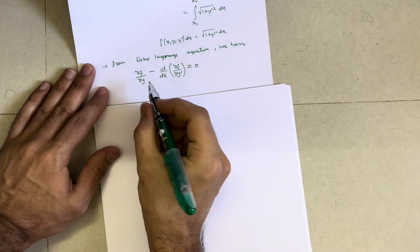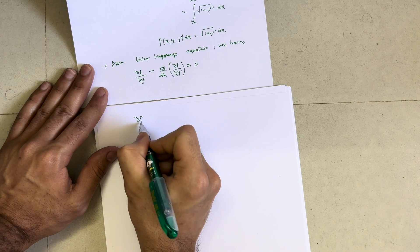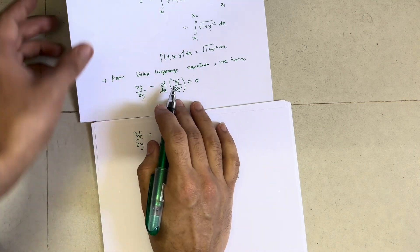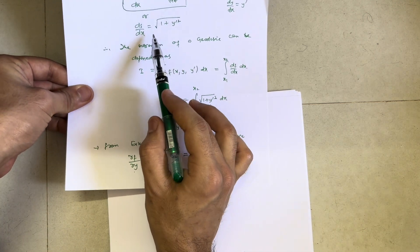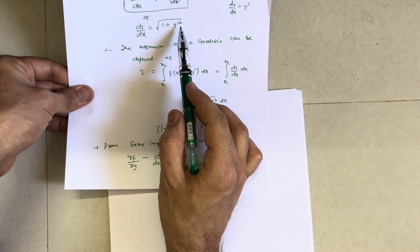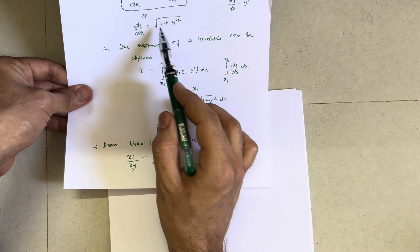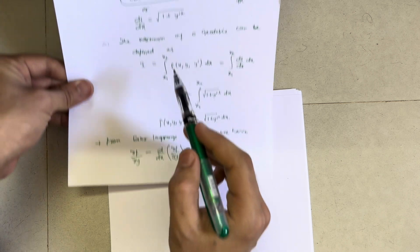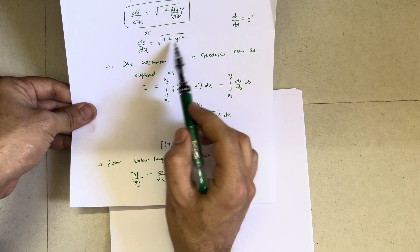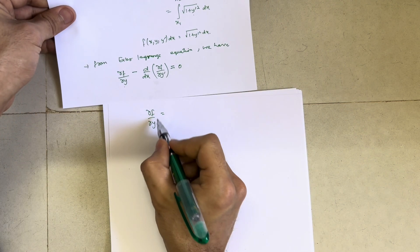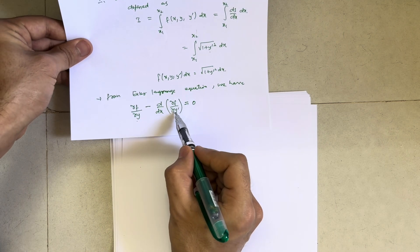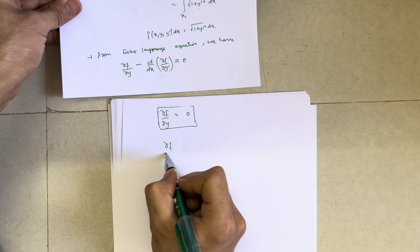Now we calculate ∂f/∂y. Our given function is f = √(1 + y'²). Differentiating with respect to y, we observe there is no y term in this expression, so ∂f/∂y = 0.